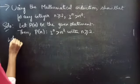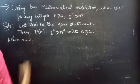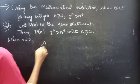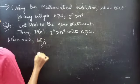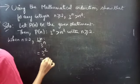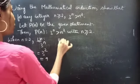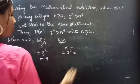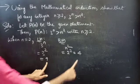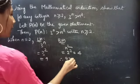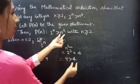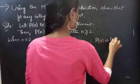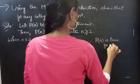When n = 2, coming to LHS: 3^n with n = 2 gives 3² = 9. Coming to RHS, n² with n = 2 gives 2² = 4. It is clear that 9 is greater than 4. Therefore LHS is greater than RHS.